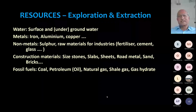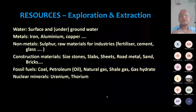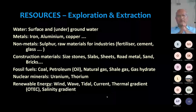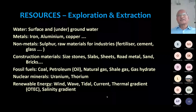We also have nuclear minerals in terms of uranium and thorium, obtained from beach sands and rocks. Then there is renewable energy, which is the need of the hour. We can obtain energy from wind — you must have seen windmills in Chitradurga. We can also obtain energy from ocean waves, tidal currents, ocean thermal energy conversion using thermal gradients, and even salinity gradients in ocean water masses.